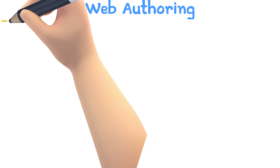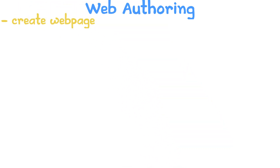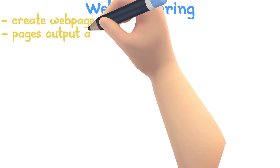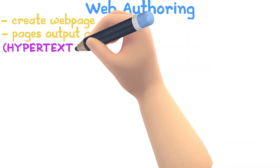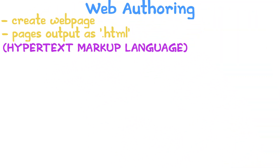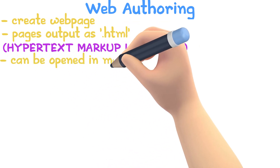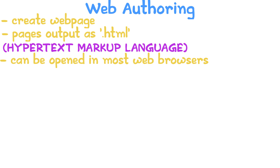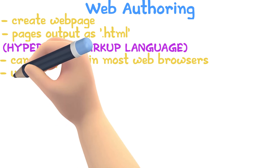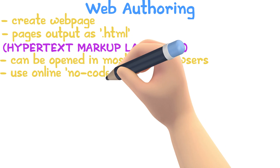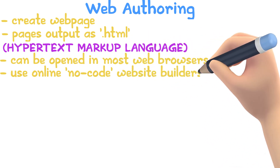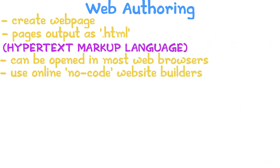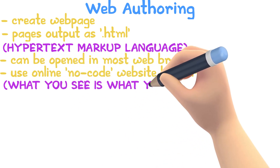Web Authoring softwares can be used to create web pages. The pages are output as HTML files — hypertext markup language — which can be opened in most web browsers. Many people use web authoring software to create web pages, but nowadays many newbies use online website builders to make simple no-code websites. These applications are referred to as what-you-see-is-what-you-get editors.